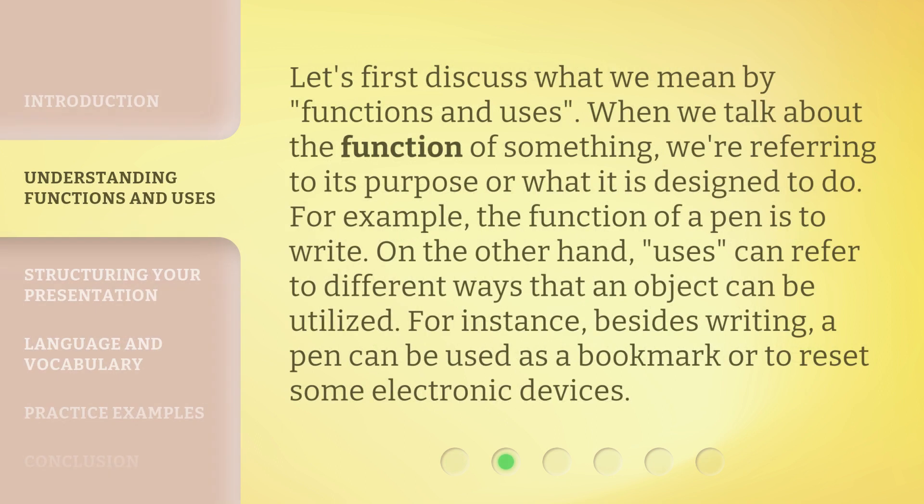Let's first discuss what we mean by Functions and Uses. When we talk about the function of something, we're referring to its purpose or what it is designed to do. For example, the function of a pen is to write. On the other hand, uses can refer to different ways that an object can be utilized. For instance, besides writing, a pen can be used as a bookmark or to reset some electronic devices.